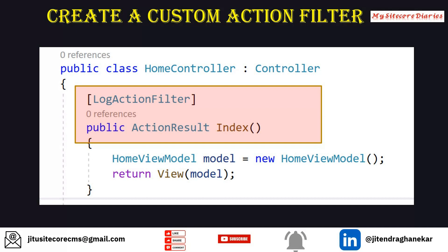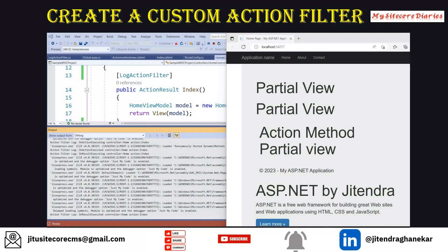To apply the custom action filter, on the HomeController's Index method I added the LogActionFilter as an attribute using square bracket notation. Now whenever the Index method gets executed, LogActionFilter will be called first. When I run this in Visual Studio, you can see in the debug output: first OnActionExecuting is called, then OnActionExecuted, then OnResultExecuting, and finally OnResultExecuted - in that sequence.